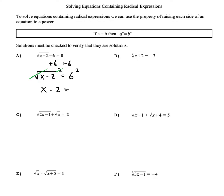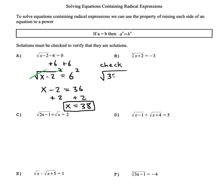We'll be left with x minus 2 equals 36. The 2 was in parentheses when surrounded by the radical, so we couldn't undo it until after we undid the radical. Now we add 2 and get x equals 38. Let's check: radical(38 - 2) - 6 = radical(36) - 6 = 6 - 6 = 0. It checks.